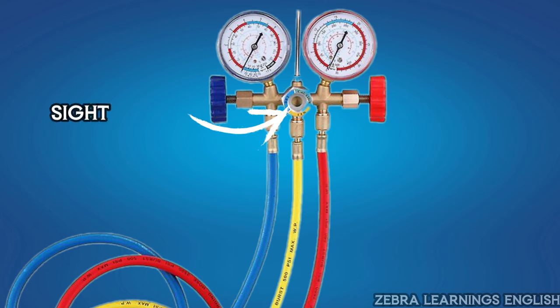This is the side glass, through which the refrigerant flow can be seen. This side glass is not available in all gauges. If you need side glass, check and buy while buying gauge.